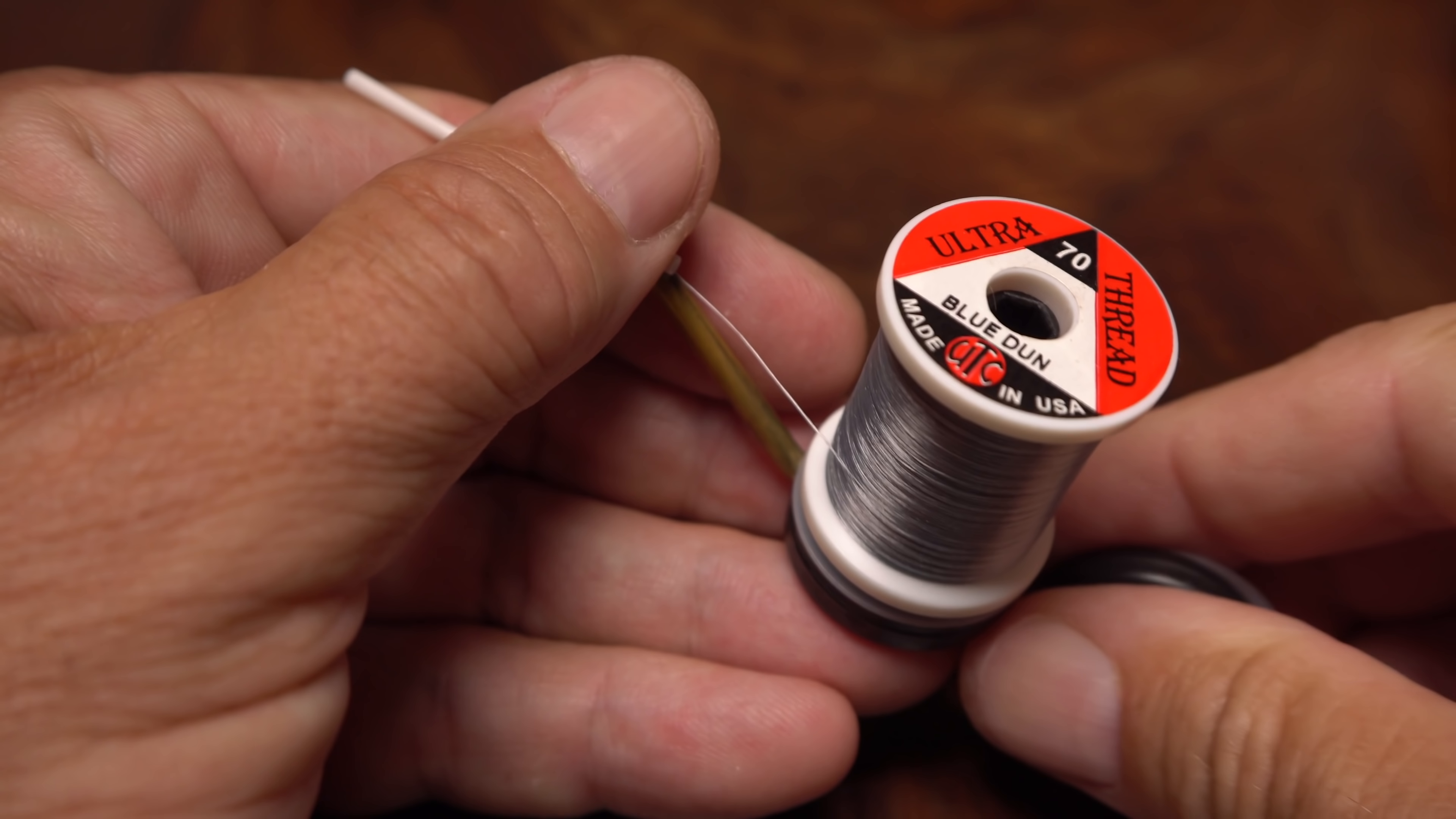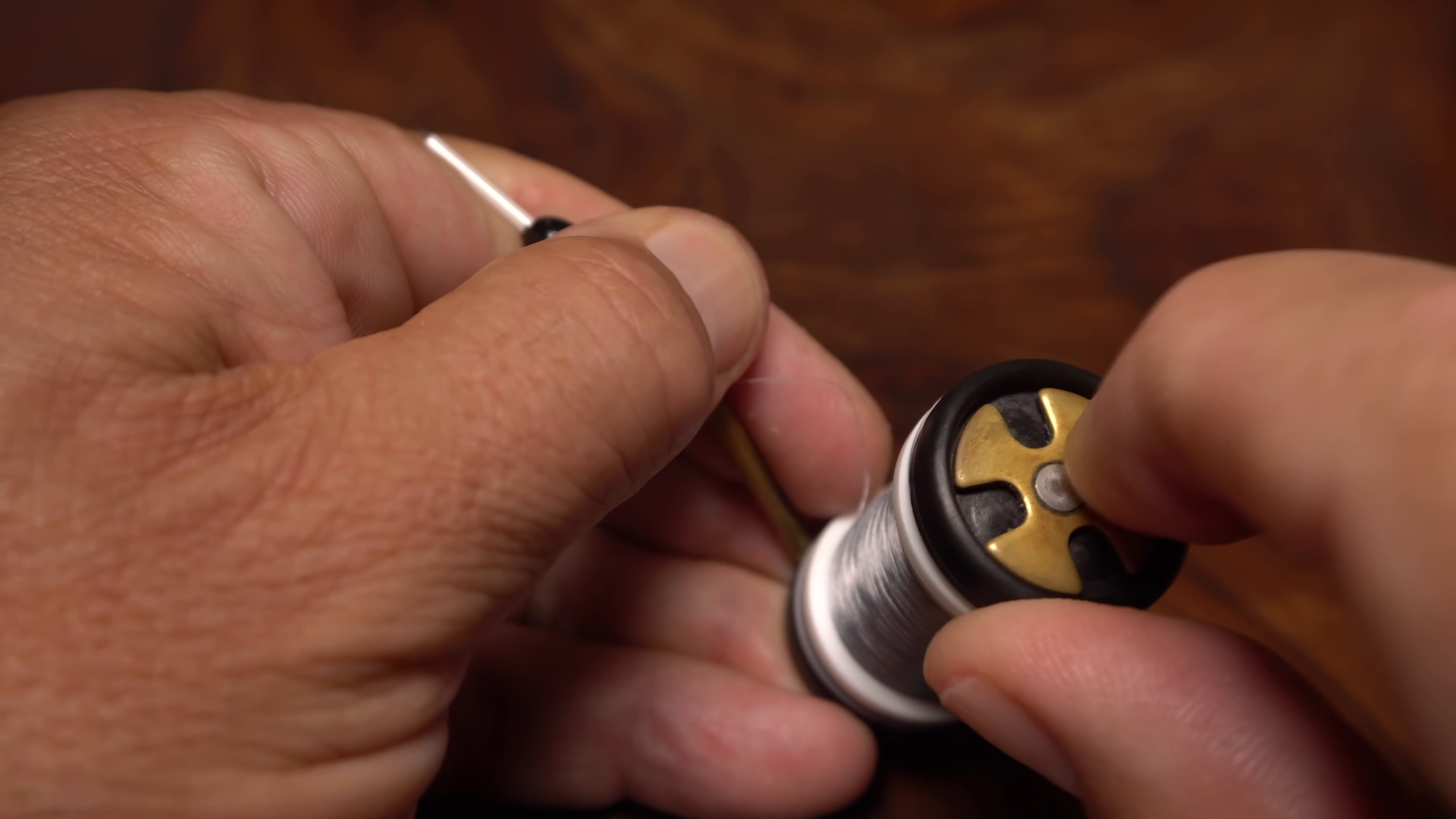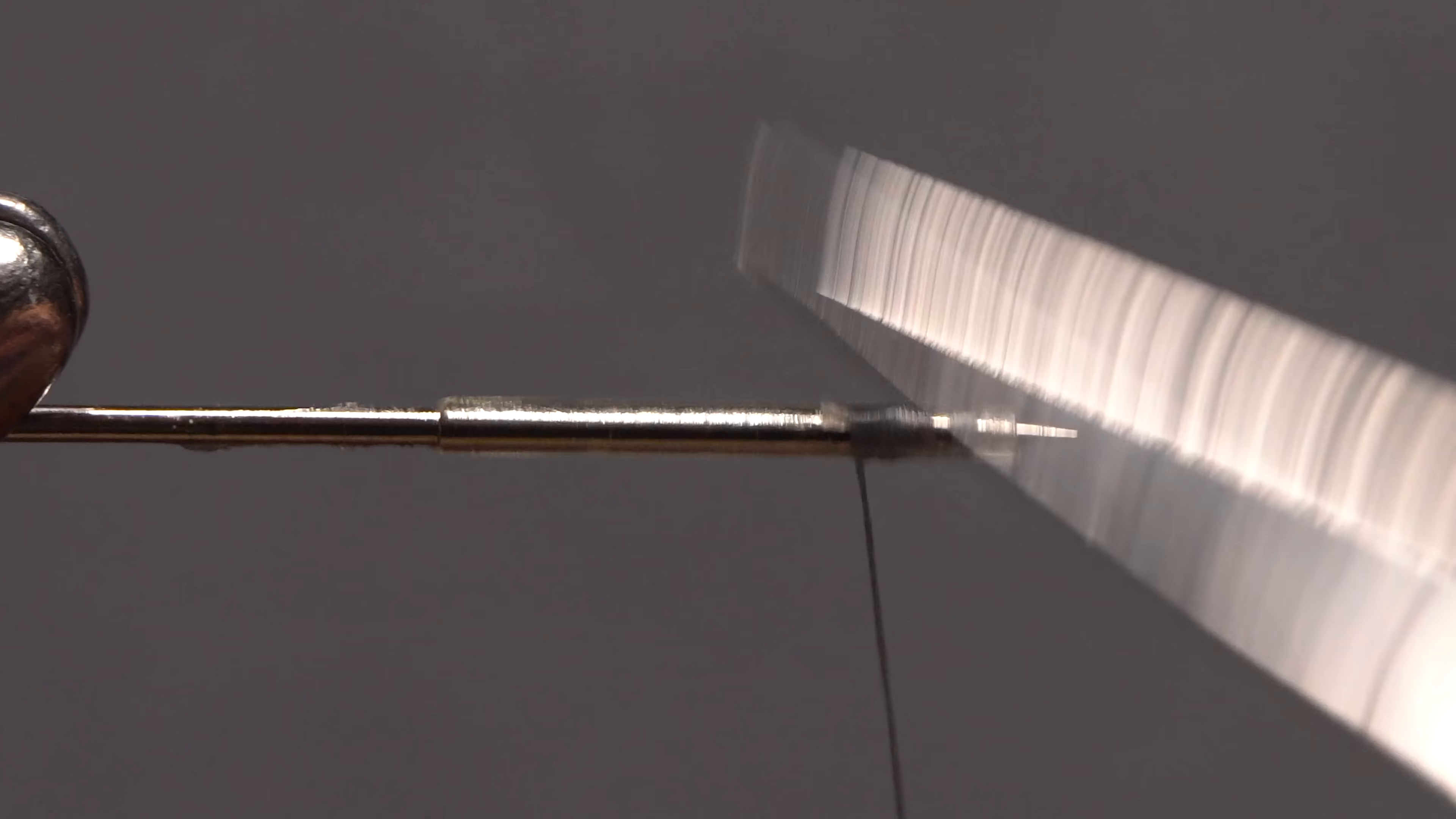For thread, I'm going to use UTC 70 Denier in blue dun, but black and maroon will also work just fine. After loading a bobbin with the thread, get it started close to the front edge of the tubing and take a few wraps rearward before snipping off the excess tag.